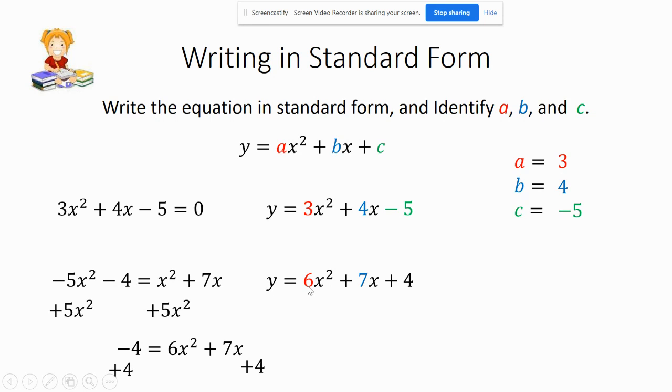now I have it in what I call general form, where the form AX squared plus BX plus C, where the A is 6, the B is 7, and the C is 4.